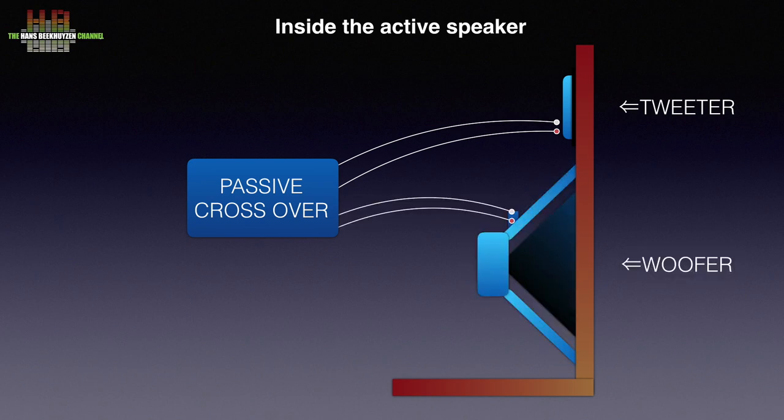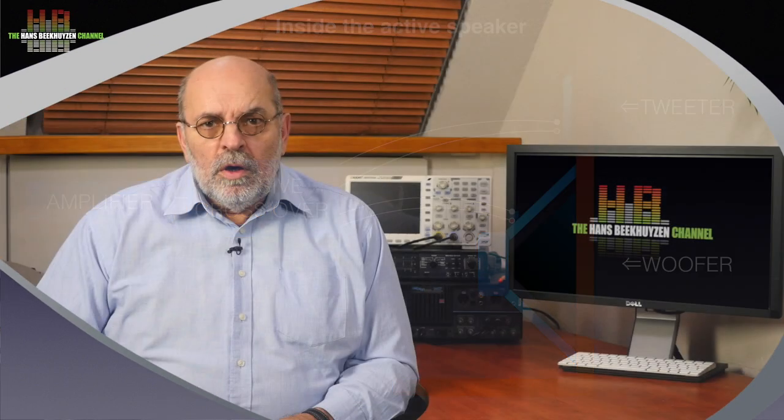When you switch to active speakers, the amps and loudspeaker cables are integrated in the loudspeaker cabinet. This means that you have to use longer interconnects and either a source that has volume-controllable outputs, a pre-amplifier, or speakers that have their own volume control.